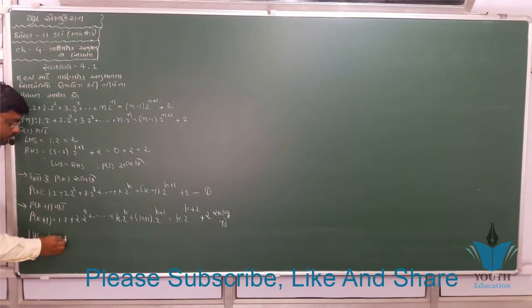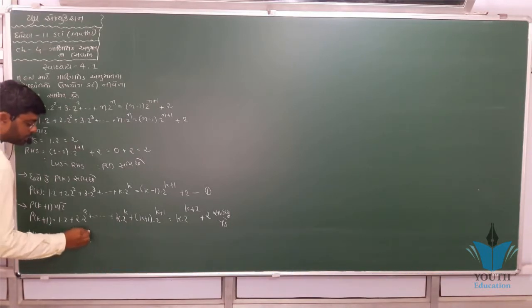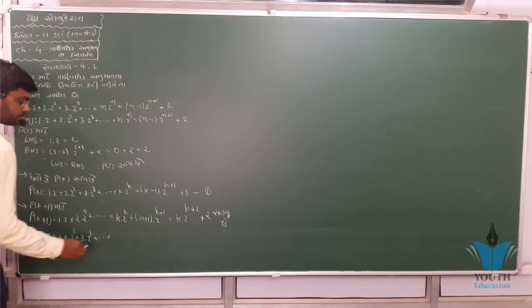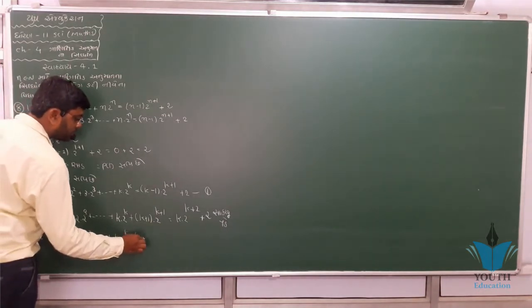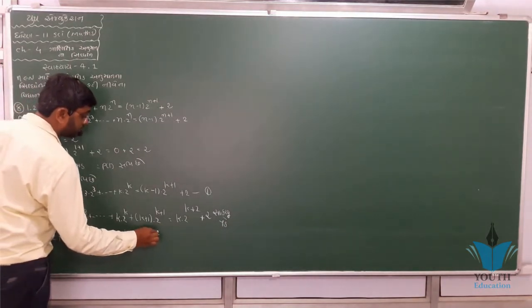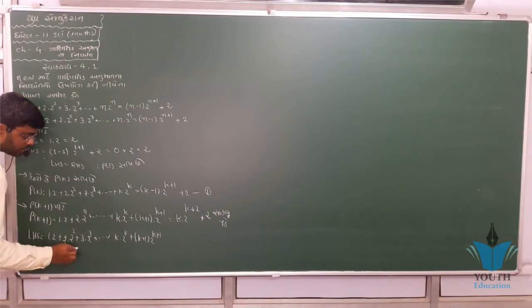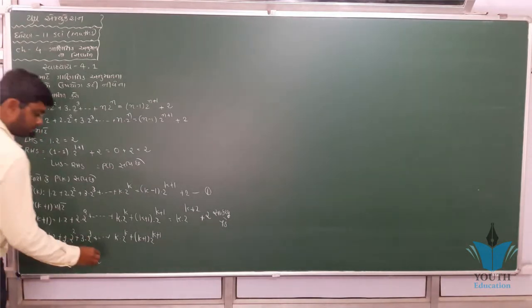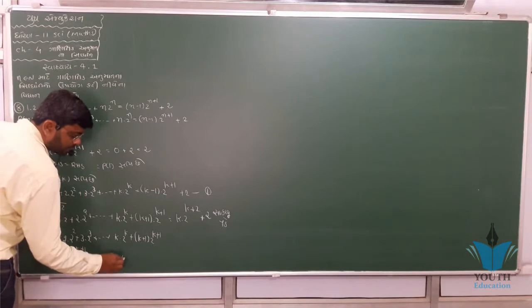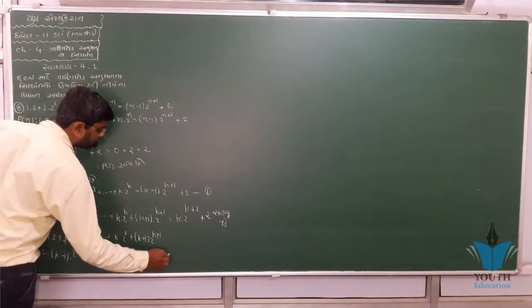From P(k), we have 1·2 + 2·2² + 3·2³ + ... + k·2^k + (k+1)·2^(k+1) = (k-1)·2^(k+1) + 2 + (k+1)·2^(k+1). Simplifying: (k-1)·2^(k+1) + (k+1)·2^(k+1) + 2 = k·2^(k+2) + 2. Thus P(k+1) is proved.